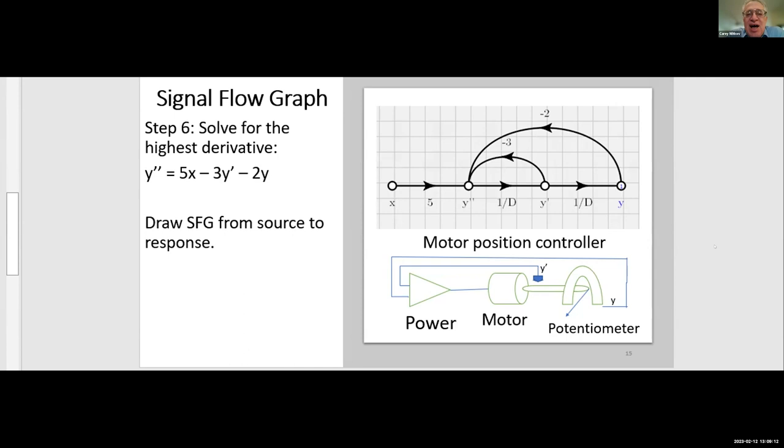So why don't we go one more step and now solve for the highest derivative. And now we draw the signal flow graph from the source to the response. This explicitly shows three terms feed into the second derivative and the signal flow graph is showing the path from input to output, and it reveals two feedback loops.